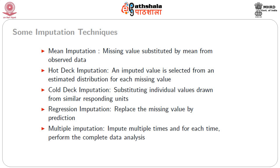The same approach can use historical data or some external source or a previous value from the same survey to replace the missing value — this is called cold deck imputation. Finally, we can use conditional mean or regression imputation, where the missing value is predicted based on available information. For example, if we have height and weight and some heights are missing, we construct a regression equation of height as a function of weight using the available data, then use the available weights to predict and impute the missing heights to create a complete dataset.